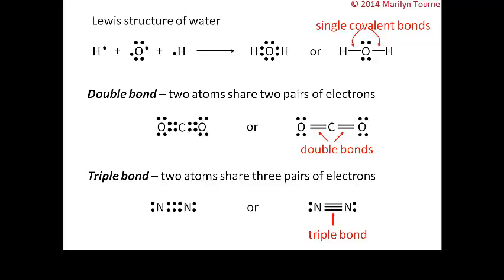The structures used to represent covalent bonds — such as F₂ — are called Lewis structures. A Lewis structure is a representation of covalent bonding in which shared electron pairs are shown either as lines or as pairs of dots between two atoms, showing only valence electrons.